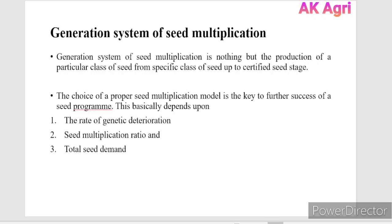This is the definition of generation system of seed multiplication. The choice of proper seed multiplication model is key to the success of the seed program. This generation system mainly depends upon the rate of genetic deterioration, the mode of pollination, the seed multiplication ratio, and the seed demand.